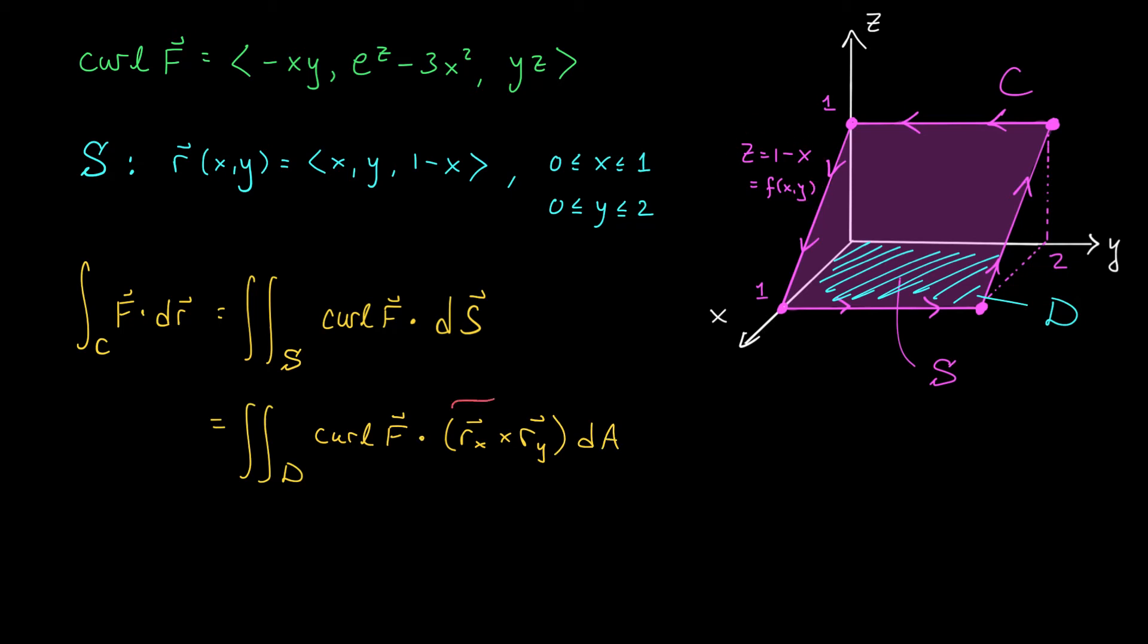of curl of F dot rx cross ry dA. But since we're dealing with the graph of a function here, z = f(x,y), we can compute rx cross ry as <-∂f/∂x, -∂f/∂y, 1>. Now the partial derivative with respect to x here is -1, and the partial derivative with respect to y is 0, so we get the vector <1, 0, 1>.